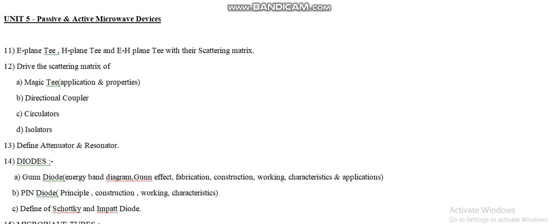Now let us have a look at unit number five, Passive and Active Microwave Devices. According to question number eleven, we need to describe the E-plane T, H-plane T, and E-H plane T along with the scattering matrix. We have to write their definitions and descriptions, and then derive the scattering matrix for each. This is also an important question.